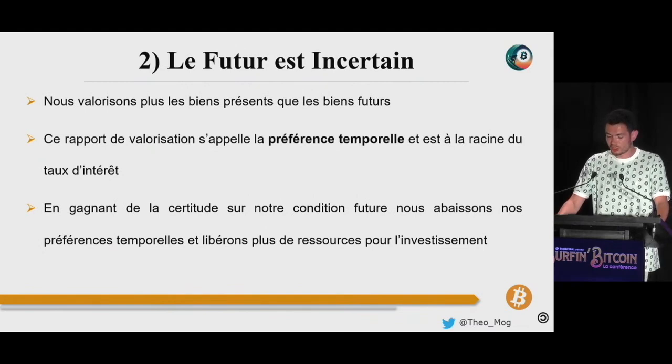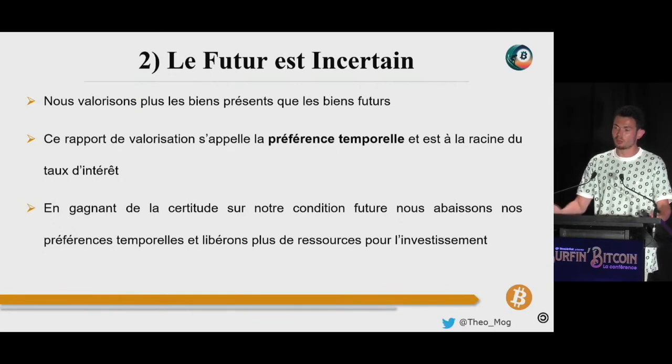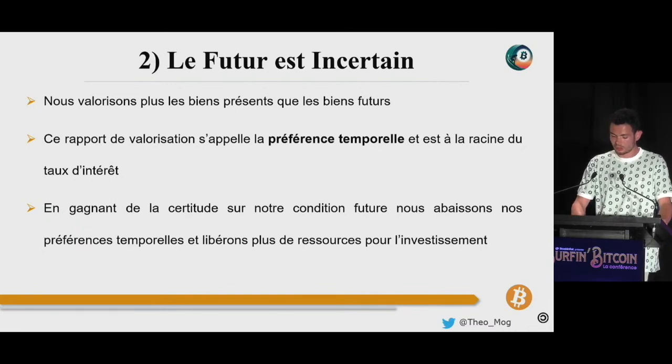Lorsqu'il s'agit de sécuriser notre condition future, il est un type de propriété qui est particulièrement important : la monnaie. Comme l'avenir est inconnaissable et incertain, vous ne savez pas exactement ce que vous allez vouloir ou de quoi vous allez avoir besoin dans le futur. Ainsi, la stratégie optimale pour se prémunir contre l'inhérente incertitude du futur, c'est d'épargner dans le bien le plus liquide, c'est-à-dire la monnaie. La monnaie est donc précisément détenue en raison de l'incertitude du futur.